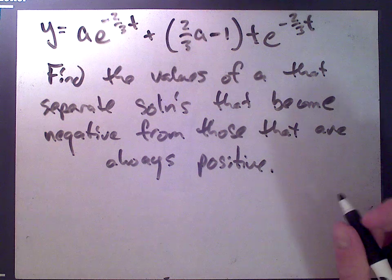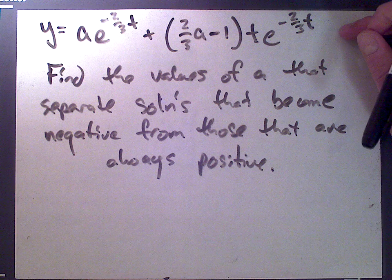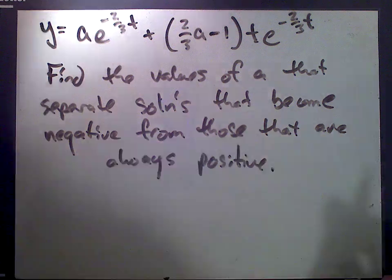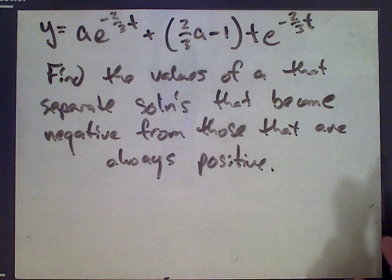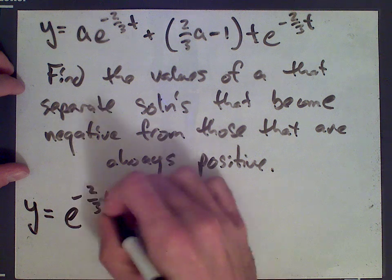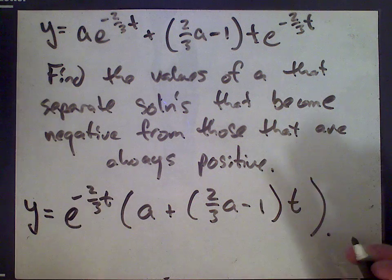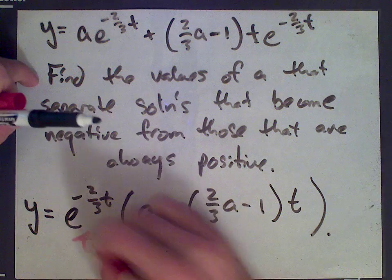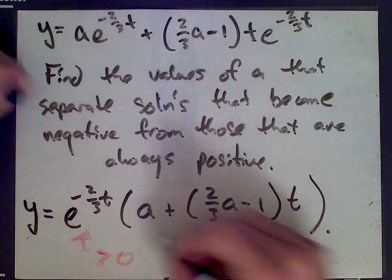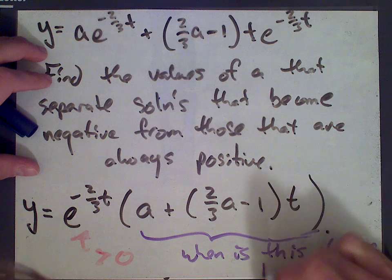For some values of a, the solution is always positive for all t; for others, the solution takes negative values. We factor out e^(-2t/3) to get y = e^(-2t/3) · [a + (2a/3 - 1)·t]. Since e to any power is always positive, we only need to analyze when a + (2a/3 - 1)·t is always positive.